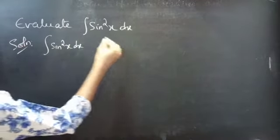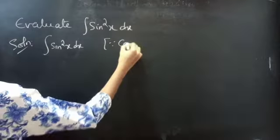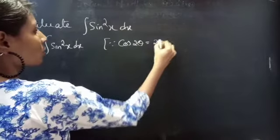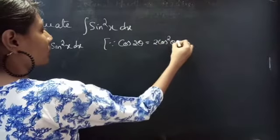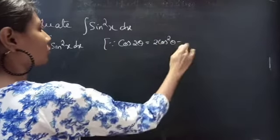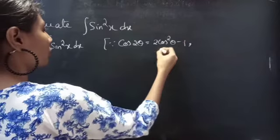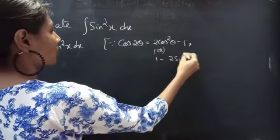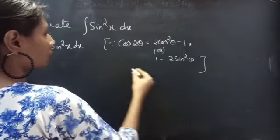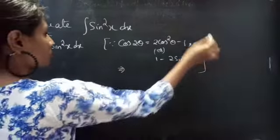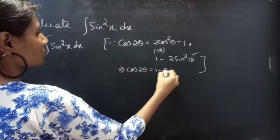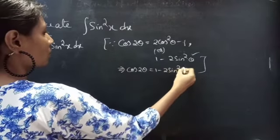We know that the identity cos 2θ equals 2 cos square θ minus 1, or 1 minus 2 sin square θ. So let's cancel this. Cos 2θ equals 1 minus 2 sin square θ.